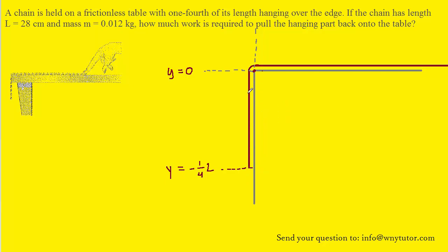What we will do next is divide the chain into a number of segments that are infinitesimally small. We can mark one of those segments about right here — this tiny little section of the chain is what we're looking at. Because it's so tiny, the actual length of that segment is represented not by y but rather by dy. We always use the notation dy to represent infinitesimal quantities — in this case, an infinitesimal length.